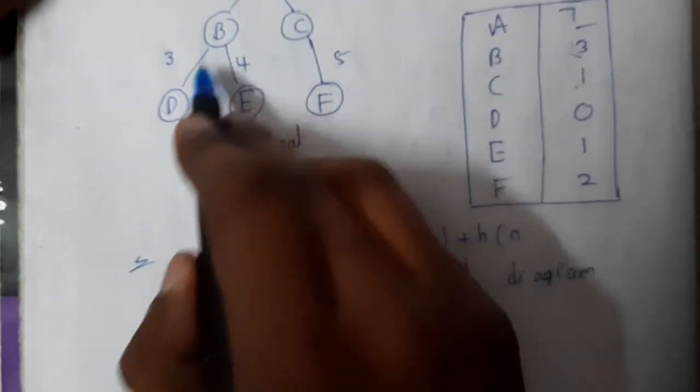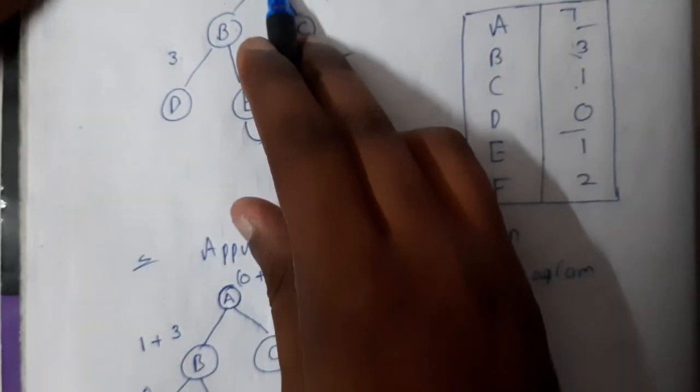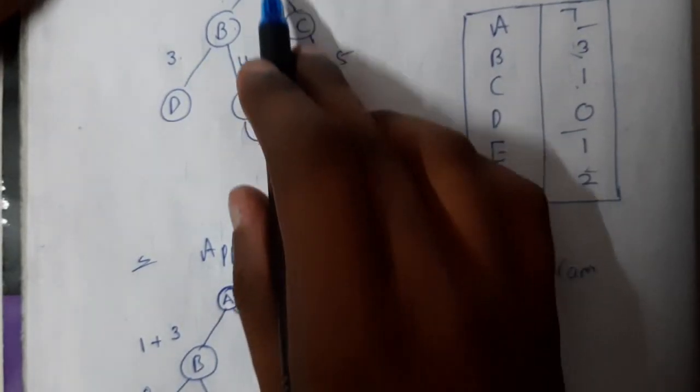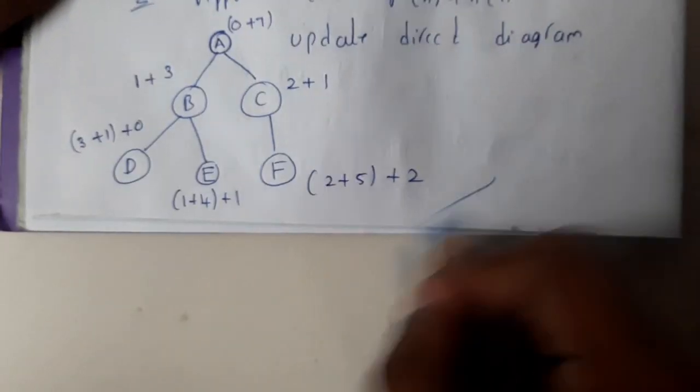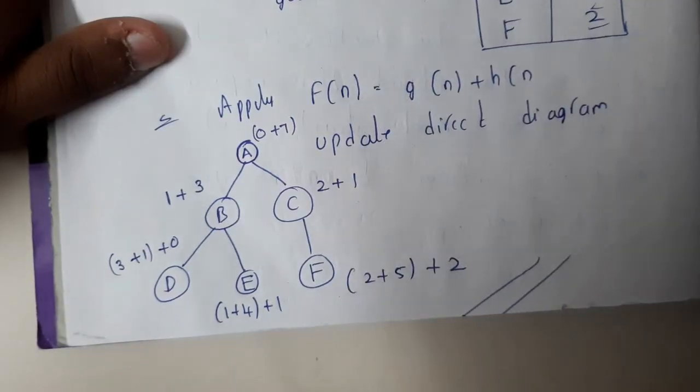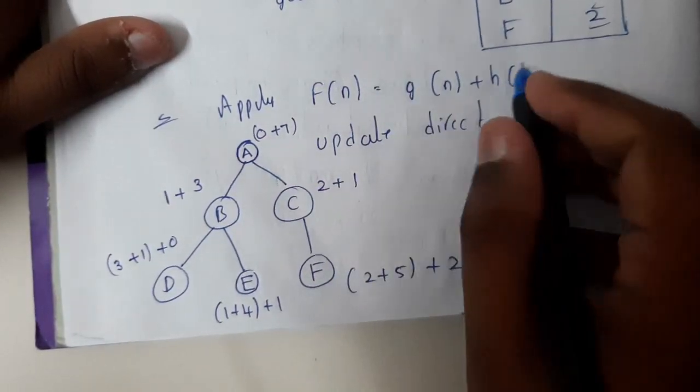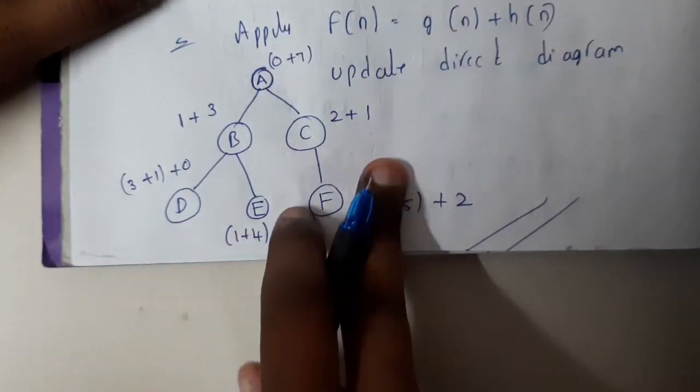So further moving on till here the diagram is done, right? So A to B to E, so 1 plus 3 plus 0, okay? So 1 plus 4 plus 1, 2 plus 5 plus 2, so in that way you will be just calculating the values of the function. So now this will be your updated directed diagram by applying the formula f(n) equal to g(n) plus h(n). Fine, so we got the values.